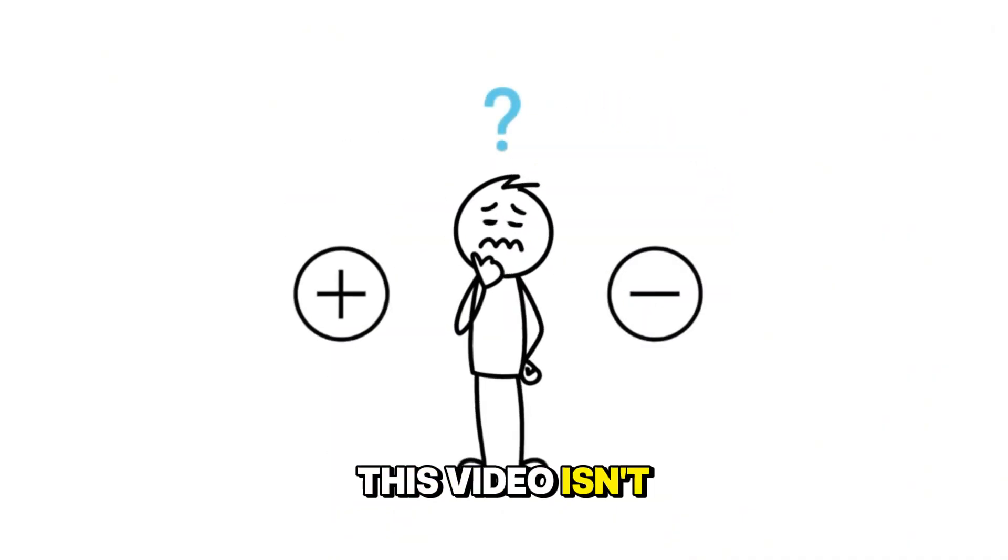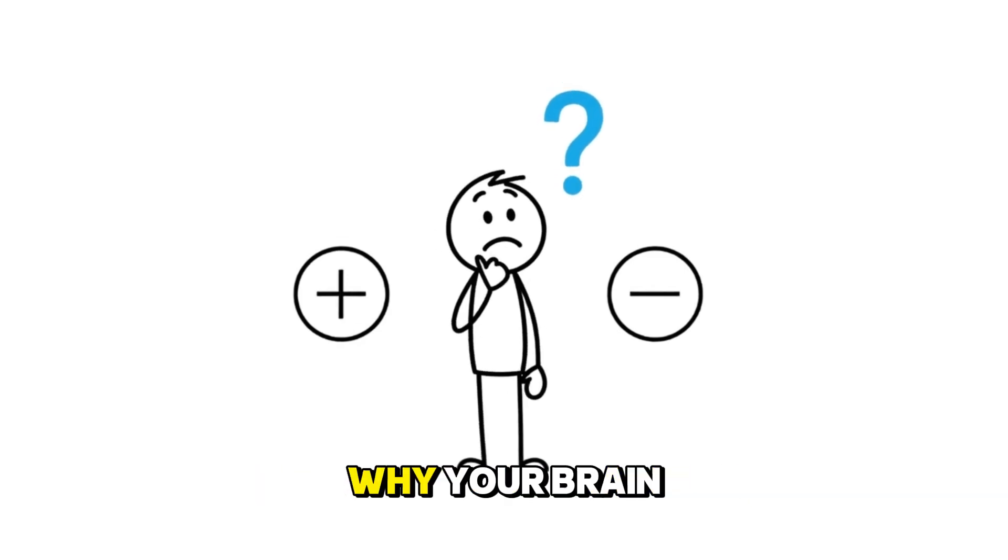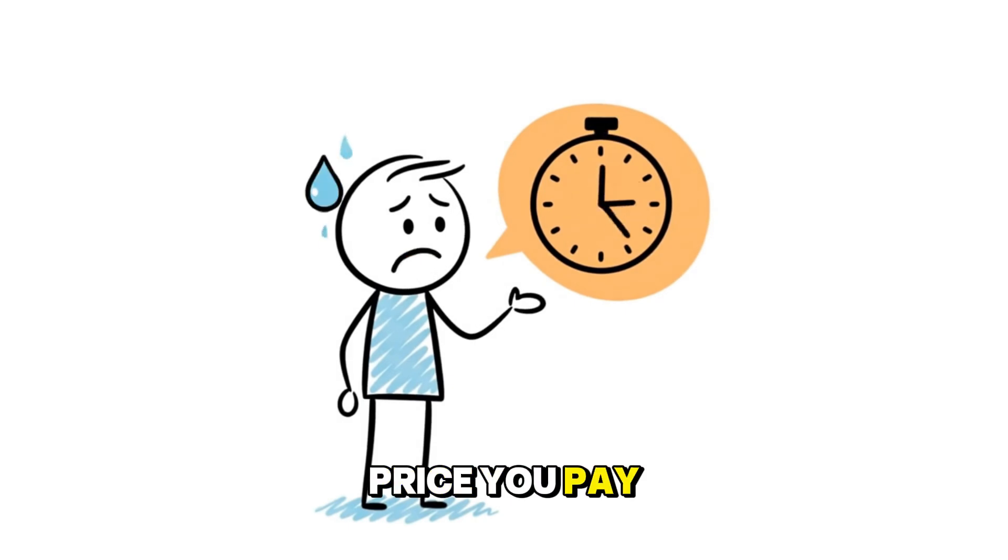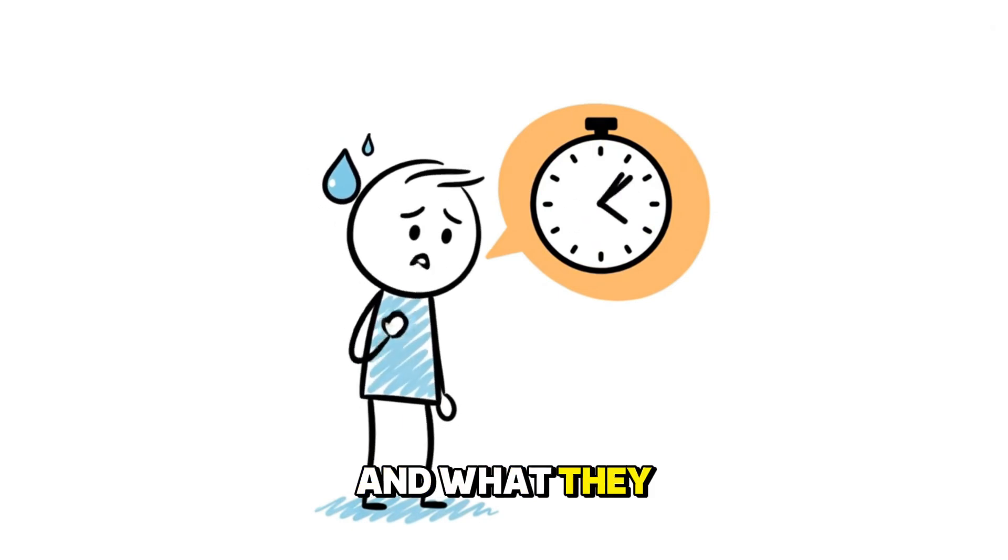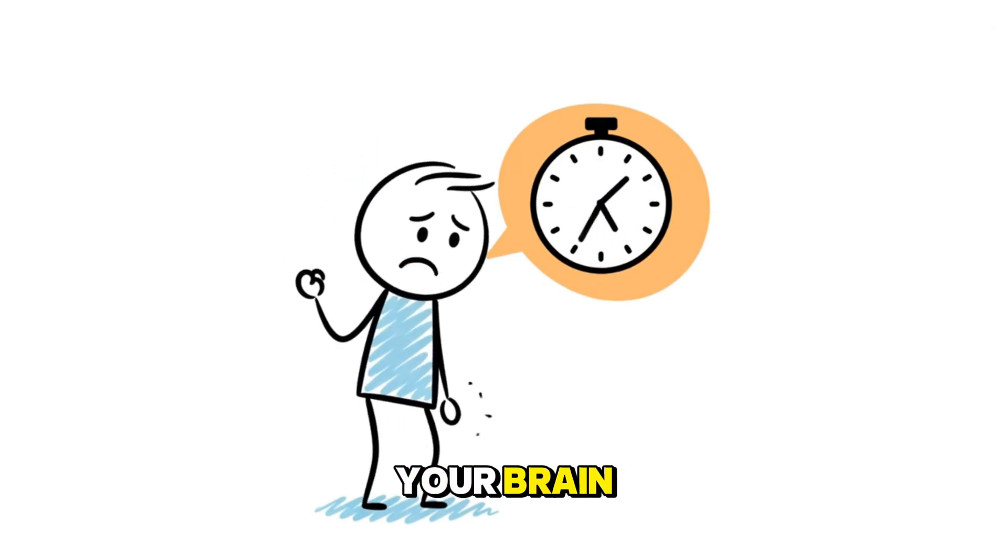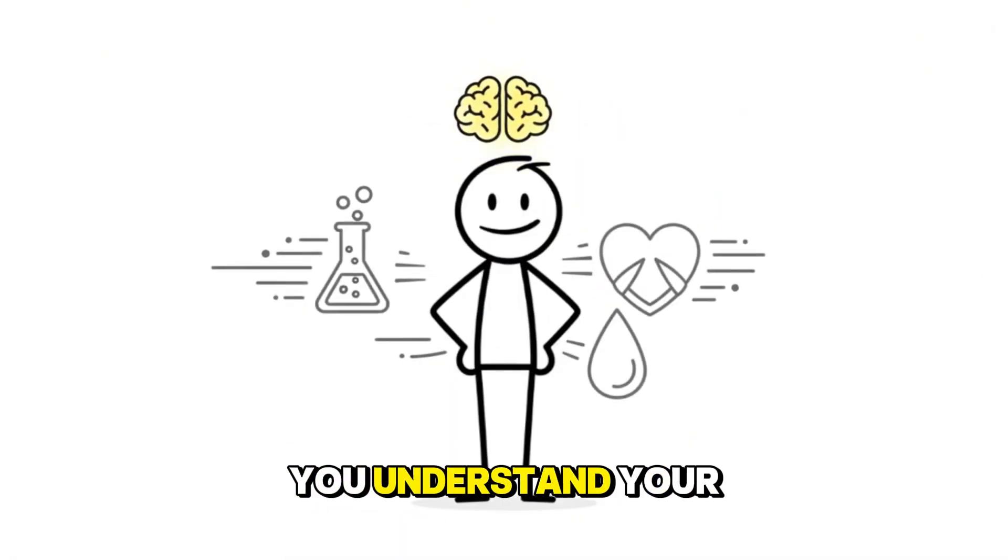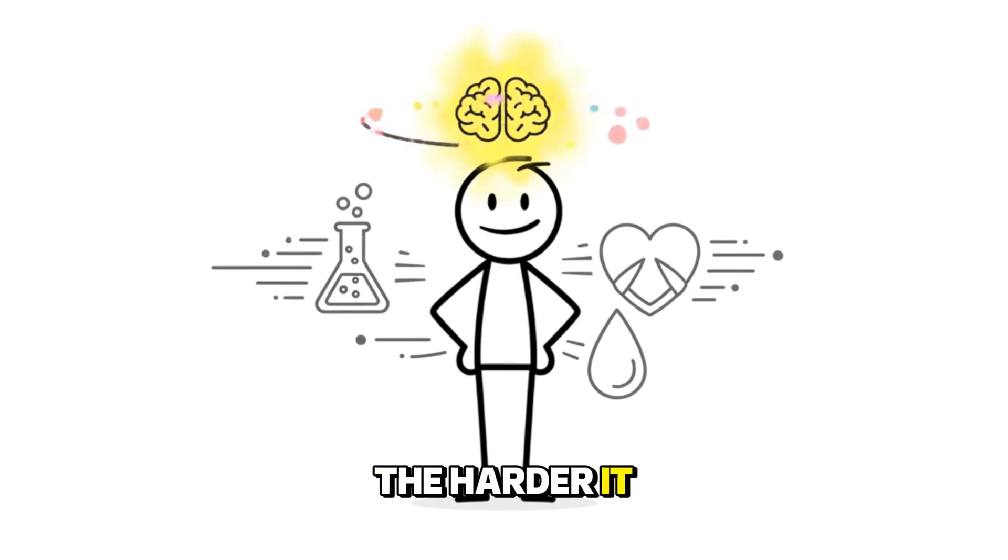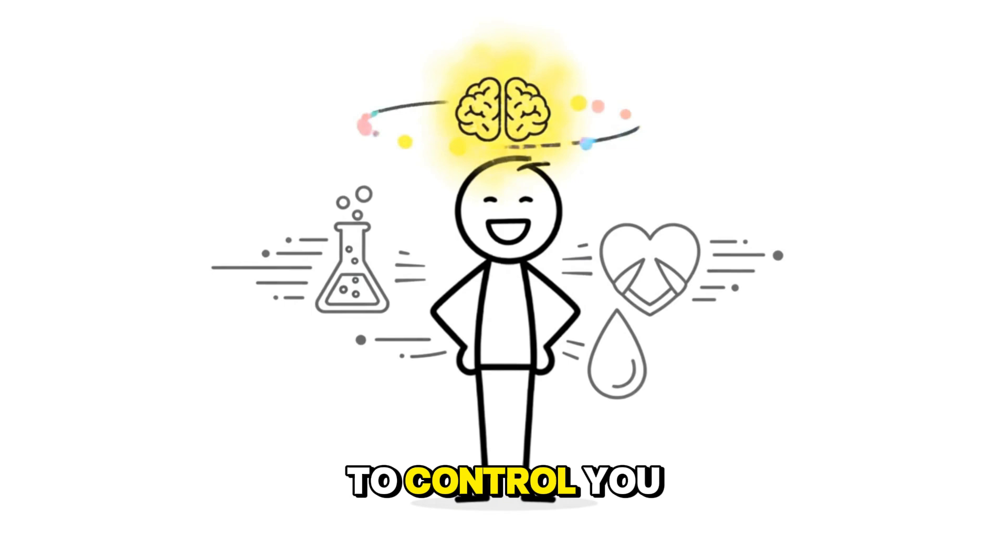This video isn't about encouraging or demonizing anything. It's about understanding why your brain falls for these feelings and why the price you pay always shows up later. Today, we'll break down 12 substances and what they actually do to your brain through the lens of psychology and neuroscience. Because the more you understand your mind, the harder it is for anything, chemical or emotional, to control you.